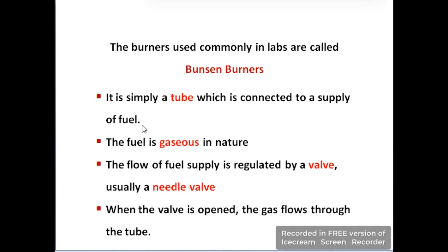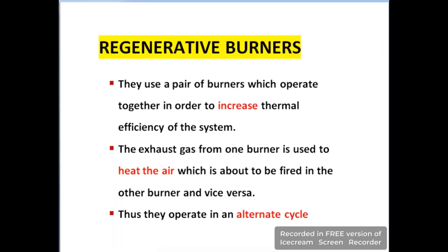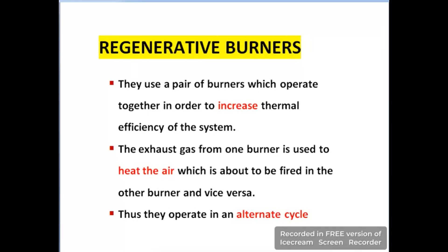The second type of burner is the regenerative burner. These types of burners contain a pair of burners and both operate together. The purpose is to increase the thermal efficiency of the system. The exhaust gas from one burner is used to heat the air which is about to be fired in the other burner. It is a pre-treatment process where air drawn from the atmosphere is preheated with the exhaust gas. They operate in an alternate cycle.